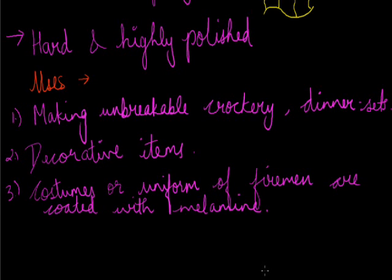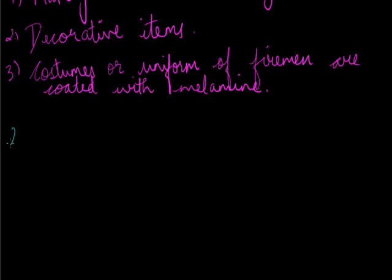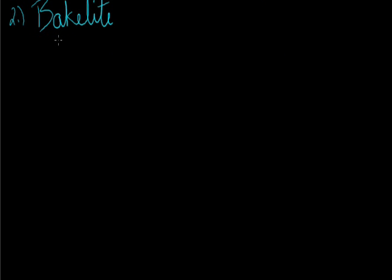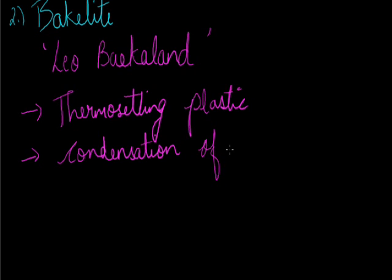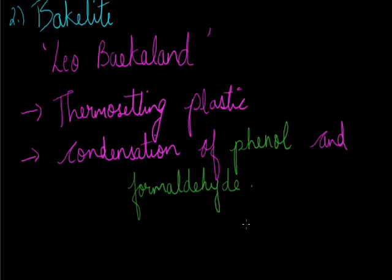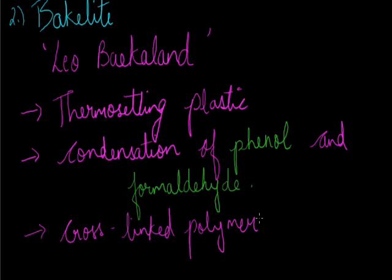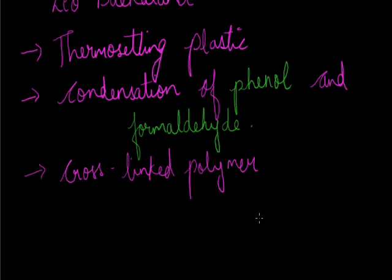The second plastic we are discussing is Bakelite. Bakelite was first synthesized by Leo Bakelite, and the polymer was named after him. Bakelite is also a thermosetting plastic, formed by the condensation of phenol and formaldehyde. It is also a cross-linked polymer. Hard Bakelite is the cross-linked polymer, while soft Bakelite is the linear polymer.